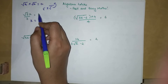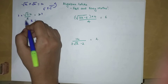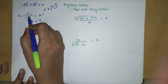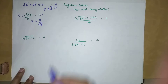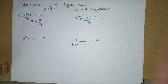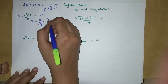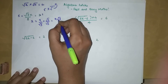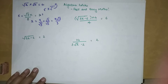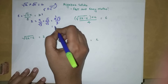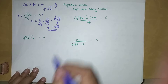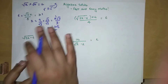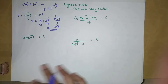Shifting the 3 to the other side by multiplying both sides by 3 — it cancels — giving us 9. Now √3 is multiplied by x, so shifting it to the denominator gives 9/√3. Since we don't leave roots in the denominator, we multiply numerator and denominator by √3: we get 9√3 / (√3 × √3) = 9√3 / 3 = 3√3. So x = 3√3.